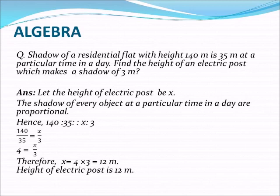Here, height of electric post is the unknown value, so we take the height of electric post as x. Then we know that shadow of every object at a particular time in a day are proportional.